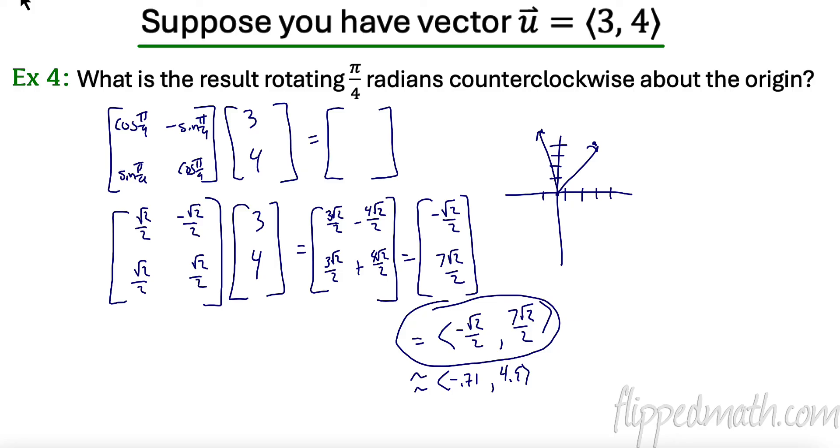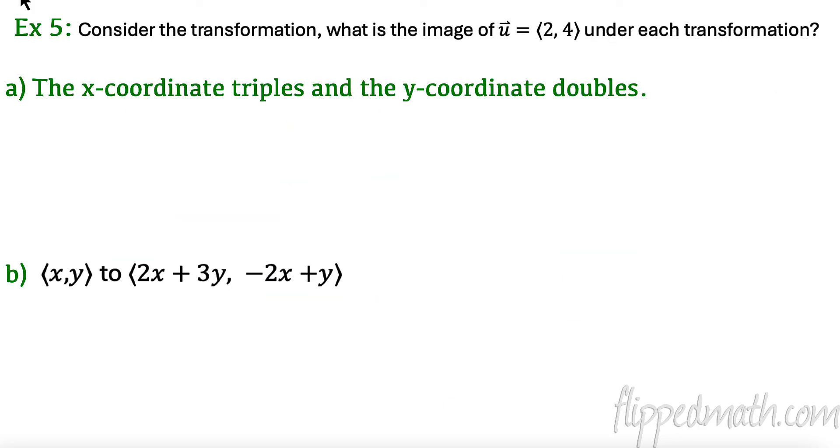Let's take a look at the next one. So maybe somebody has some other transformations, right? So this one, it says the x-coordinate triples and the y-coordinate doubles. So what I like to do first is start with my transformation. Let's see what that is. So I have x, y, and it's going to go to triple my x-coordinate, double my y-coordinate. Easy. That is three, zero, and that is zero, two. Because that's like saying I have three x plus zero y's and zero x's plus two y's. That's what I'm doing there.